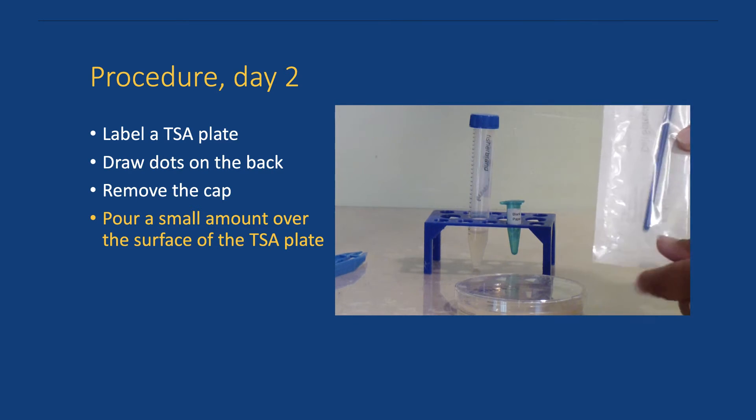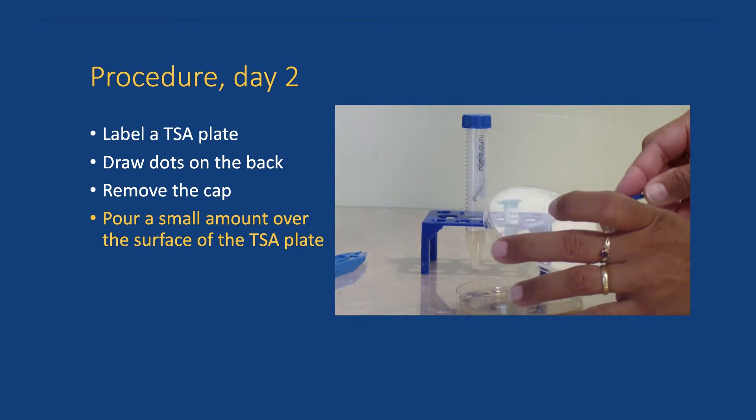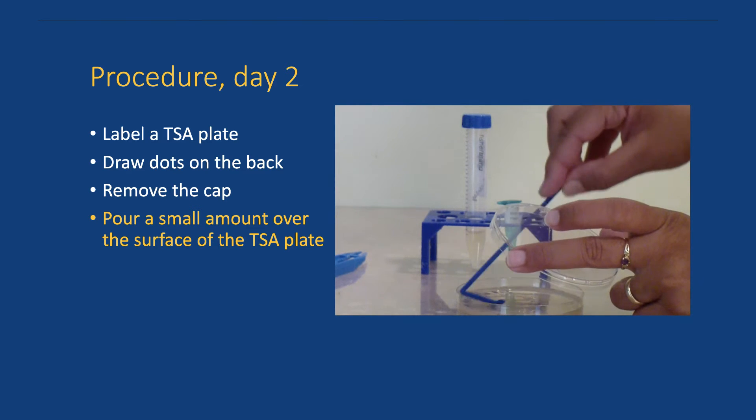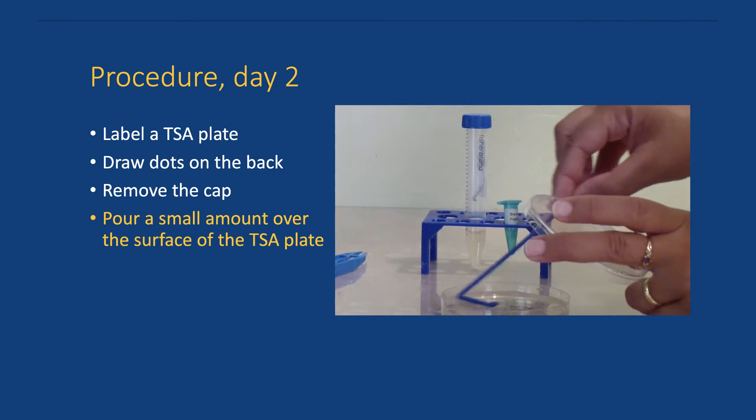Remove the sterile spreader from its packaging and use it to spread the broth over the entire surface of the plate to make a bacterial lawn. Be sure not to dip in too much into the medium and to cover the entire surface.